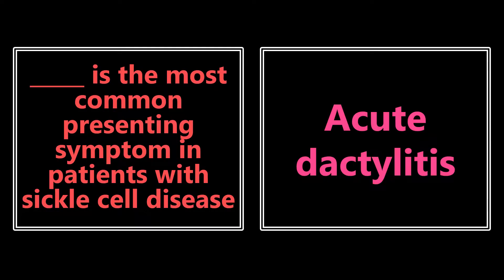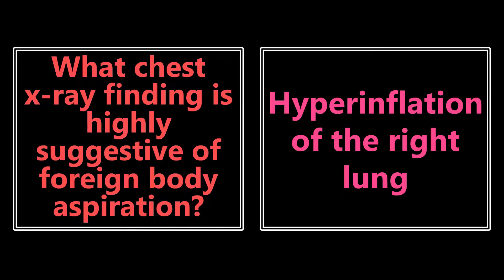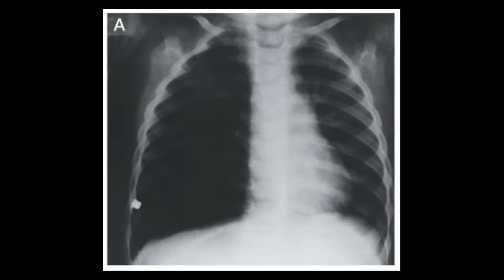What chest x-ray finding is highly suggestive of foreign body aspiration? The most important one is hyperinflation of the right lung. If you see this on the exam or see an image of it, this is very suggestive of a foreign body aspiration. Looking at the picture here, the right lung is very hyperinflated — very dark, not really showing any lung markings. Especially in a pediatric patient, you may not be able to see the foreign body, but think about foreign body aspiration.